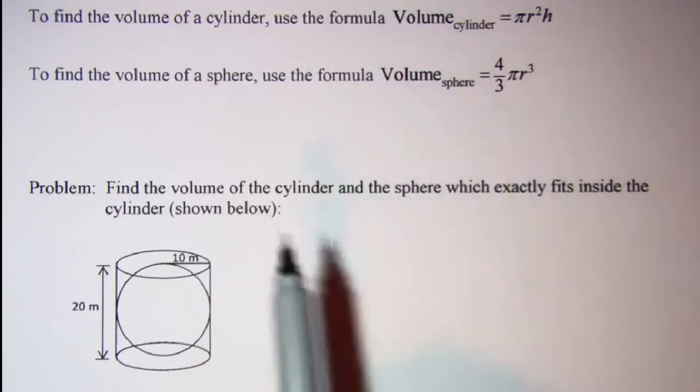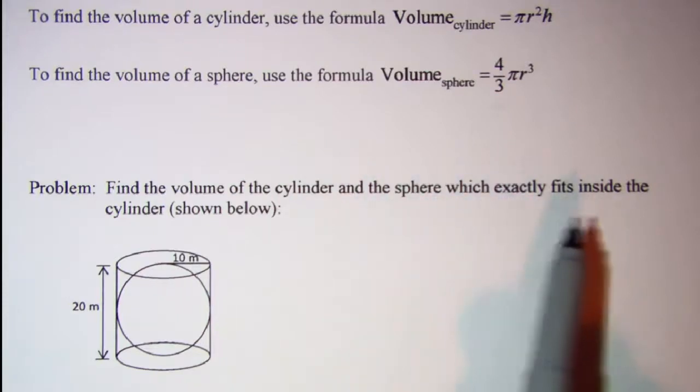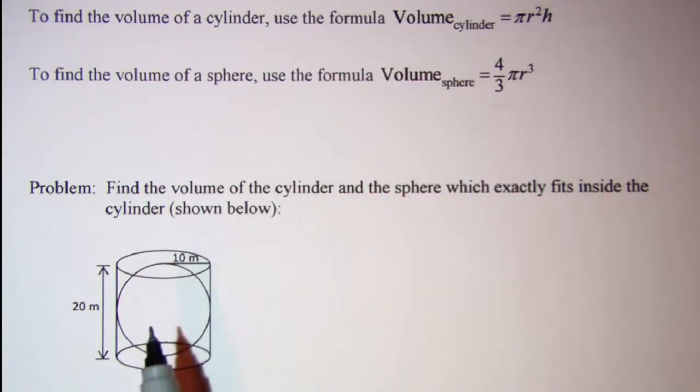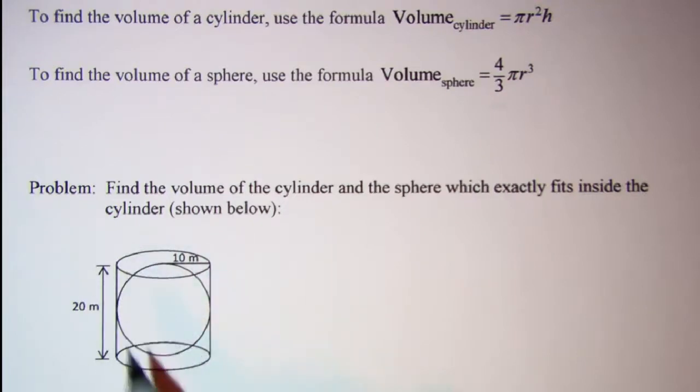The problem we'll be doing is to find the volume of the cylinder and the sphere which exactly fits inside the cylinder shown below. So our sphere, notice it has a radius of 10 meters, and then our cylinder has a radius of 10 and a height of 20.